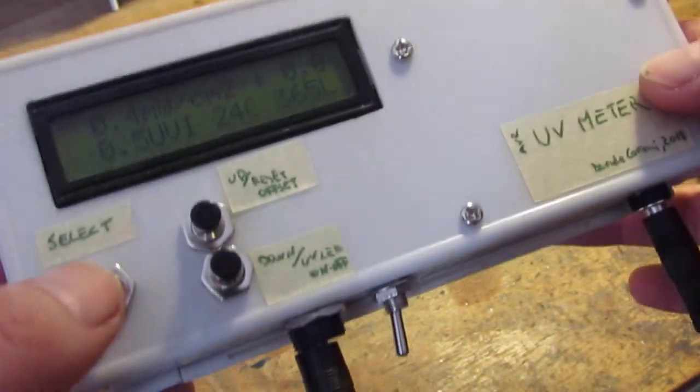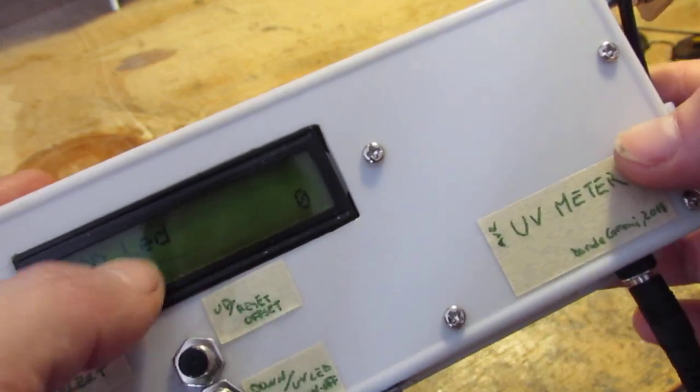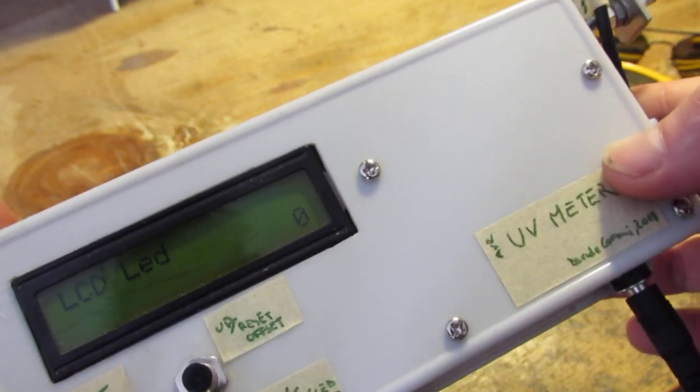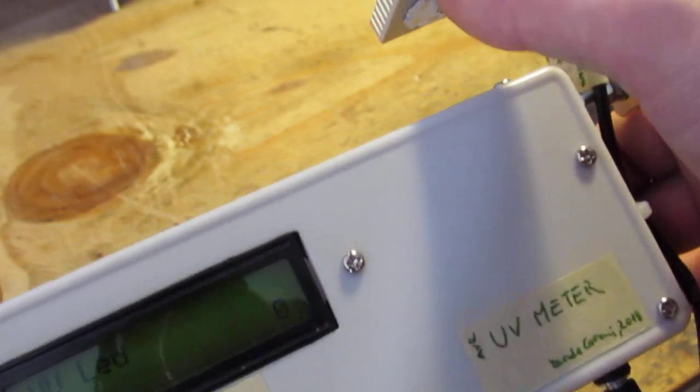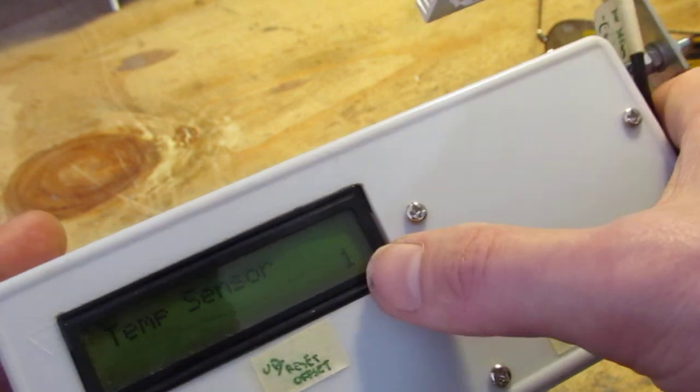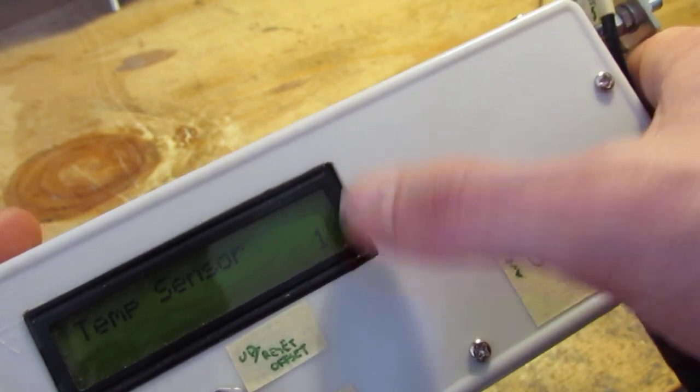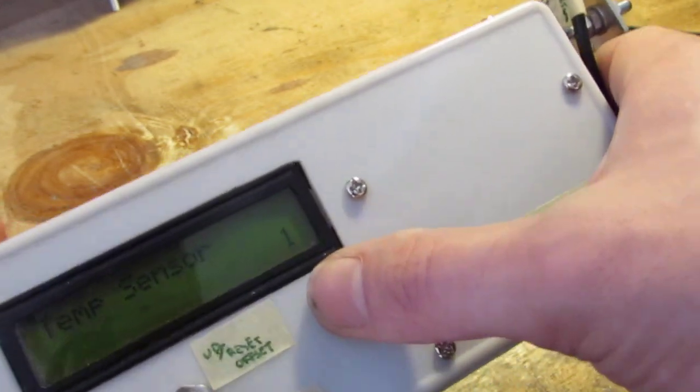Now let's see the menu. If I press select, I can switch the LCD backlight on or off. Then this is to put the UV LED on or off. This is to correlate the value against temperature, and I can disable the temperature correlation here.